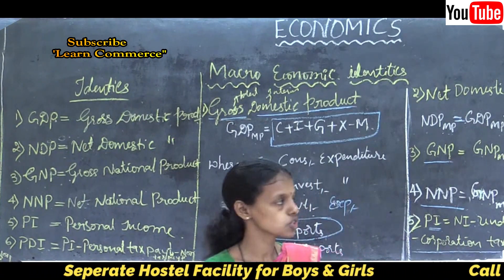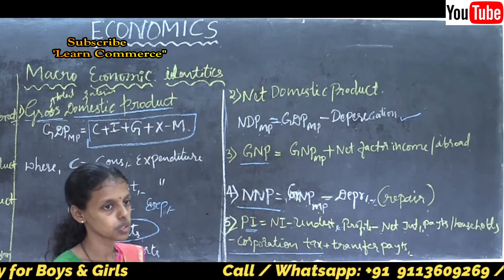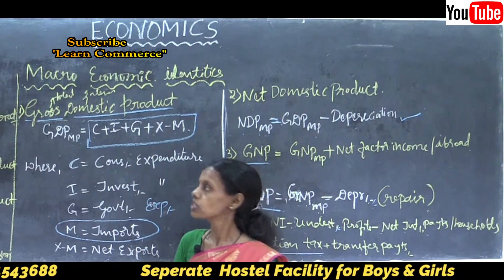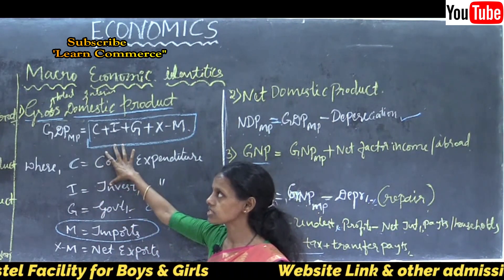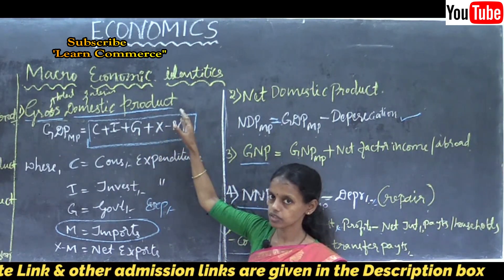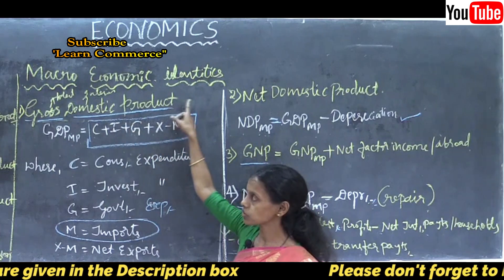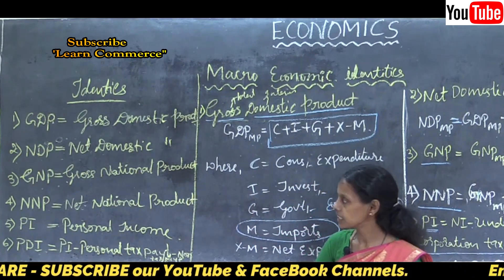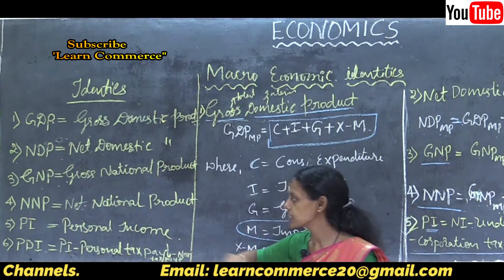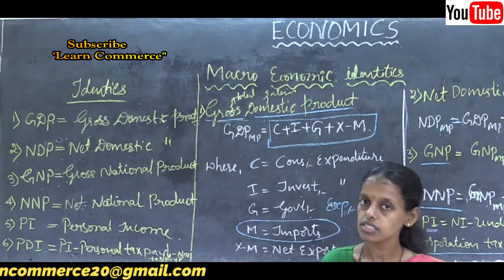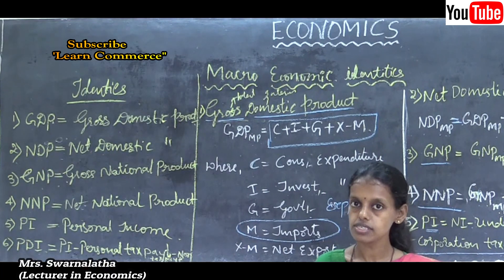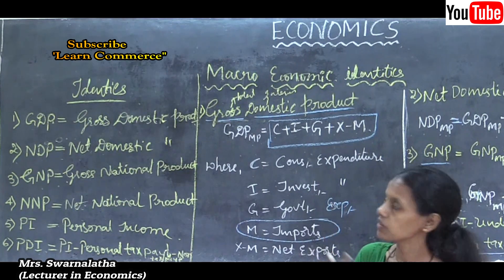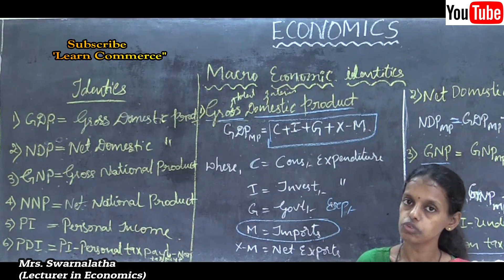This is very important for six-mark students. There are six macroeconomic identities: GDP — Gross Domestic Product, NDP — Net Domestic Product, GNP — Gross National Product, NNP — Net National Product, PI — Personal Income, and PDI — Personal Disposable Income. These are the ways to calculate macroeconomic identities. GDP is said to be the barometer of economic development, as economic welfare always depends upon the total product produced in the country.